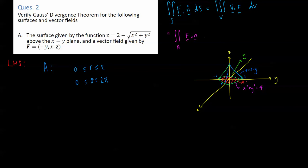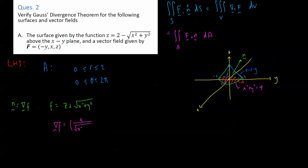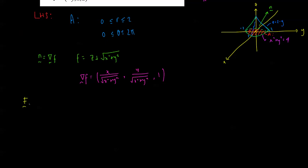We need to find n, the normal to the surface. We have the formula: n equals grad f. So f equals z plus the square root of x squared plus y squared, bringing everything to one side. Taking grad f: the x-component is x divided by the square root of x squared plus y squared, the y-component is y divided by the square root of x squared plus y squared, and the z-component is 1. Since the z-component is positive, this is the positive outward normal, so we don't need to multiply by negative one.